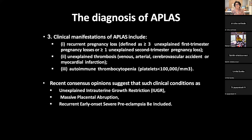Recent consensus opinion also suggests we should test for APS in: unexplained intrauterine growth restriction, massive placental abruption without a clear cause, and recurrent early-onset severe preeclampsia — where a patient has a sudden rise in blood pressure at 14, 16, or 18 weeks or any time early in pregnancy. These are the clinical manifestations that should raise concern for APS.